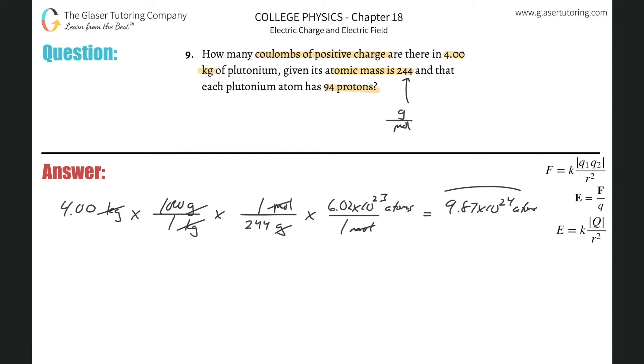So now, if I know this number of atoms, and they told us that each plutonium atom has 94 protons, all I now have to do is basically take this value and multiply it by 94. I could have also done that in the conversion process, too, but I decided to stop there. So let's multiply that by 94. Now we realize we've got about 9.28 times 10 raised to the 26th now, protons.